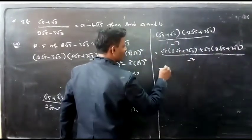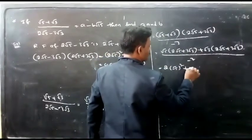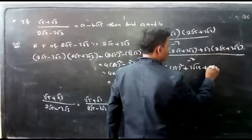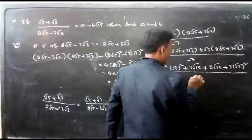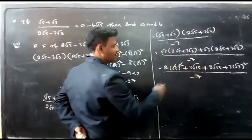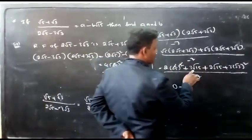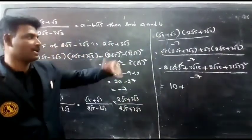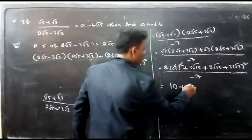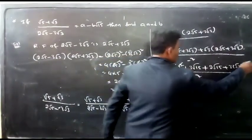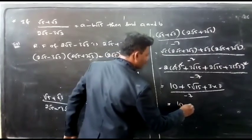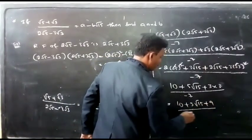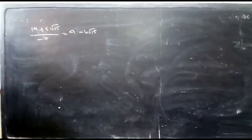Expanding the numerator: √5 × 2√5 = 2×5 = 10, plus √5 × 3√3 = 3√15, plus √3 × 2√5 = 2√15, plus √3 × 3√3 = 3×3 = 9. Combining like terms: 10 + 9 + (3+2)√15 = 19 + 5√15. So the result is (19 + 5√15) / −7, which equals a − b√15.